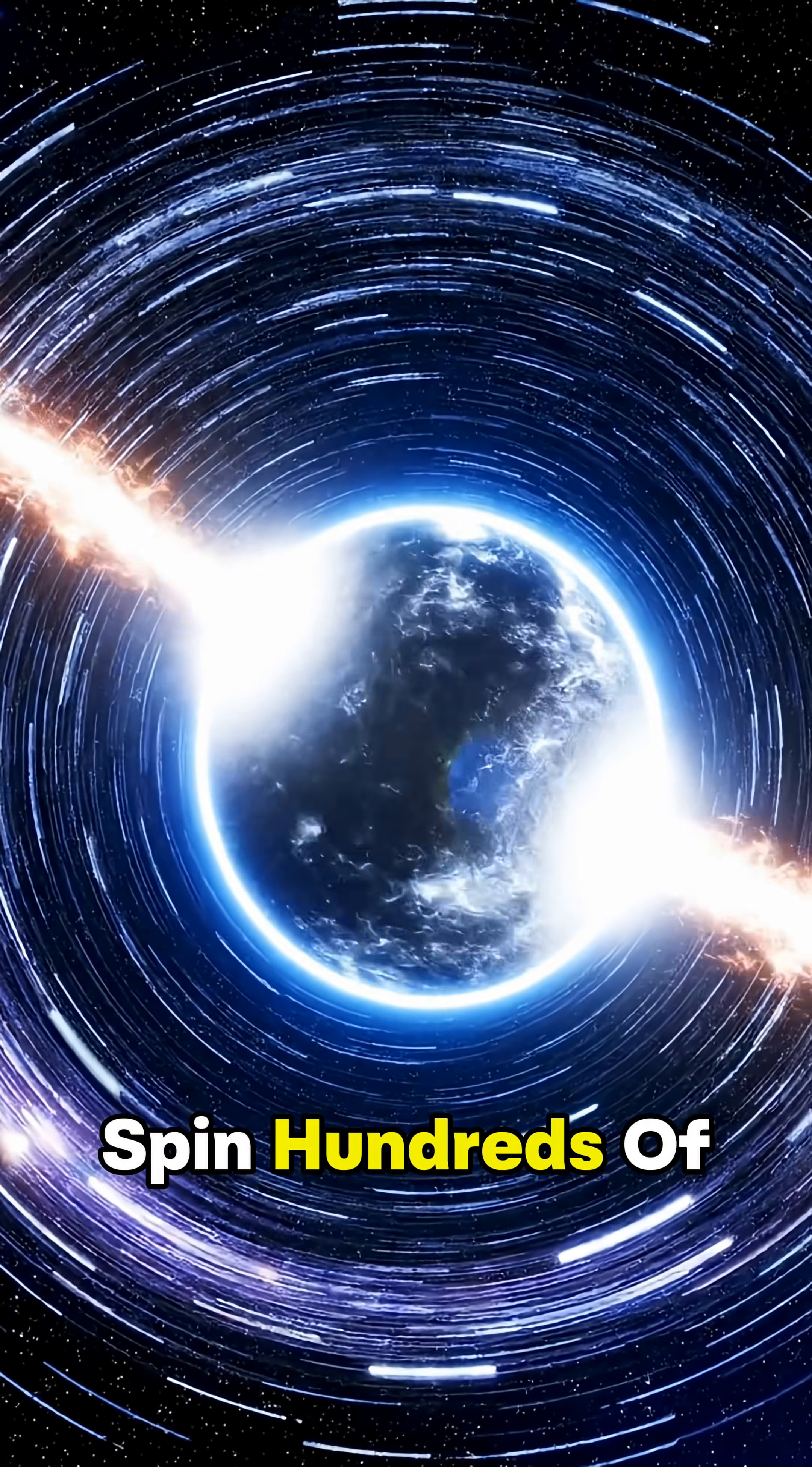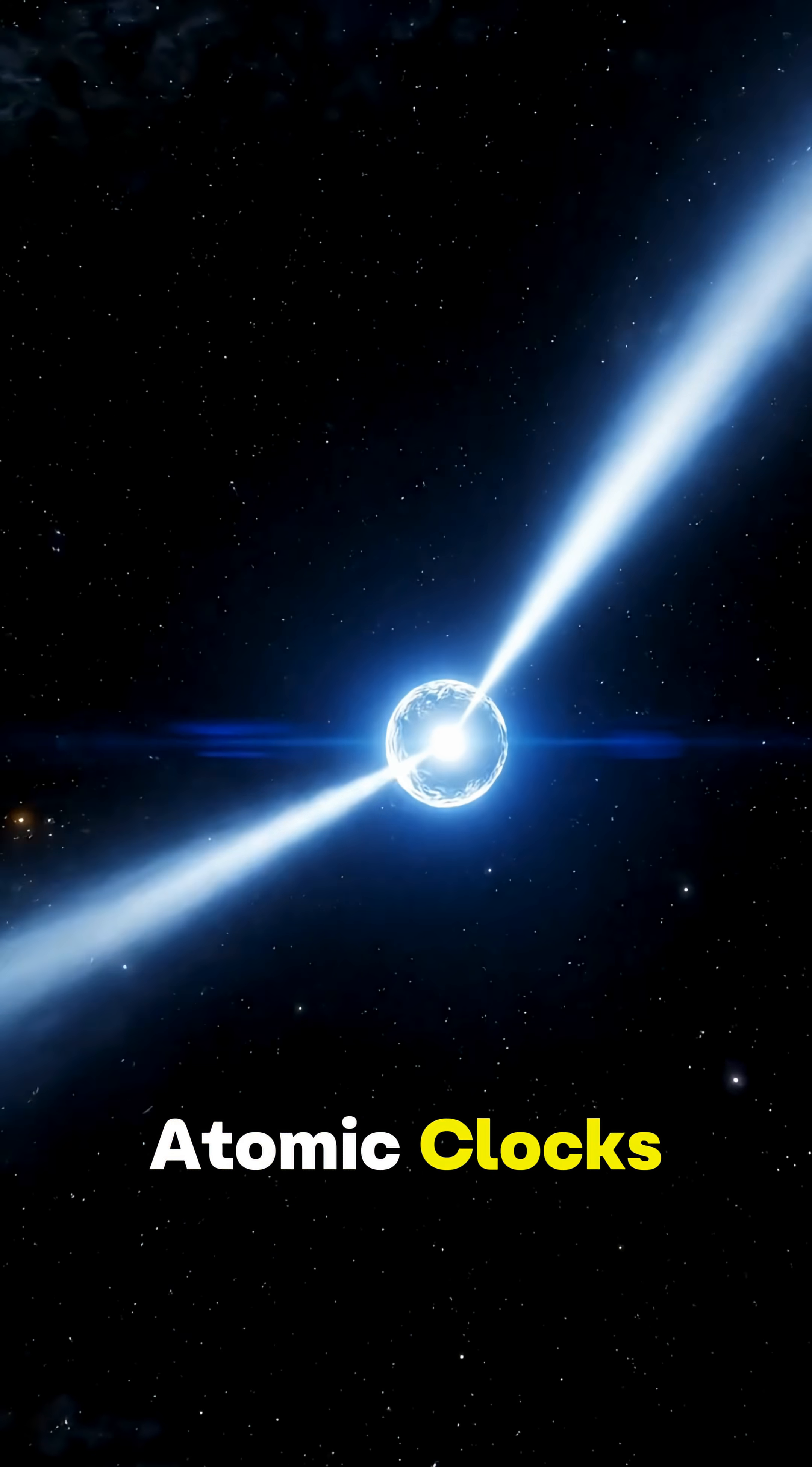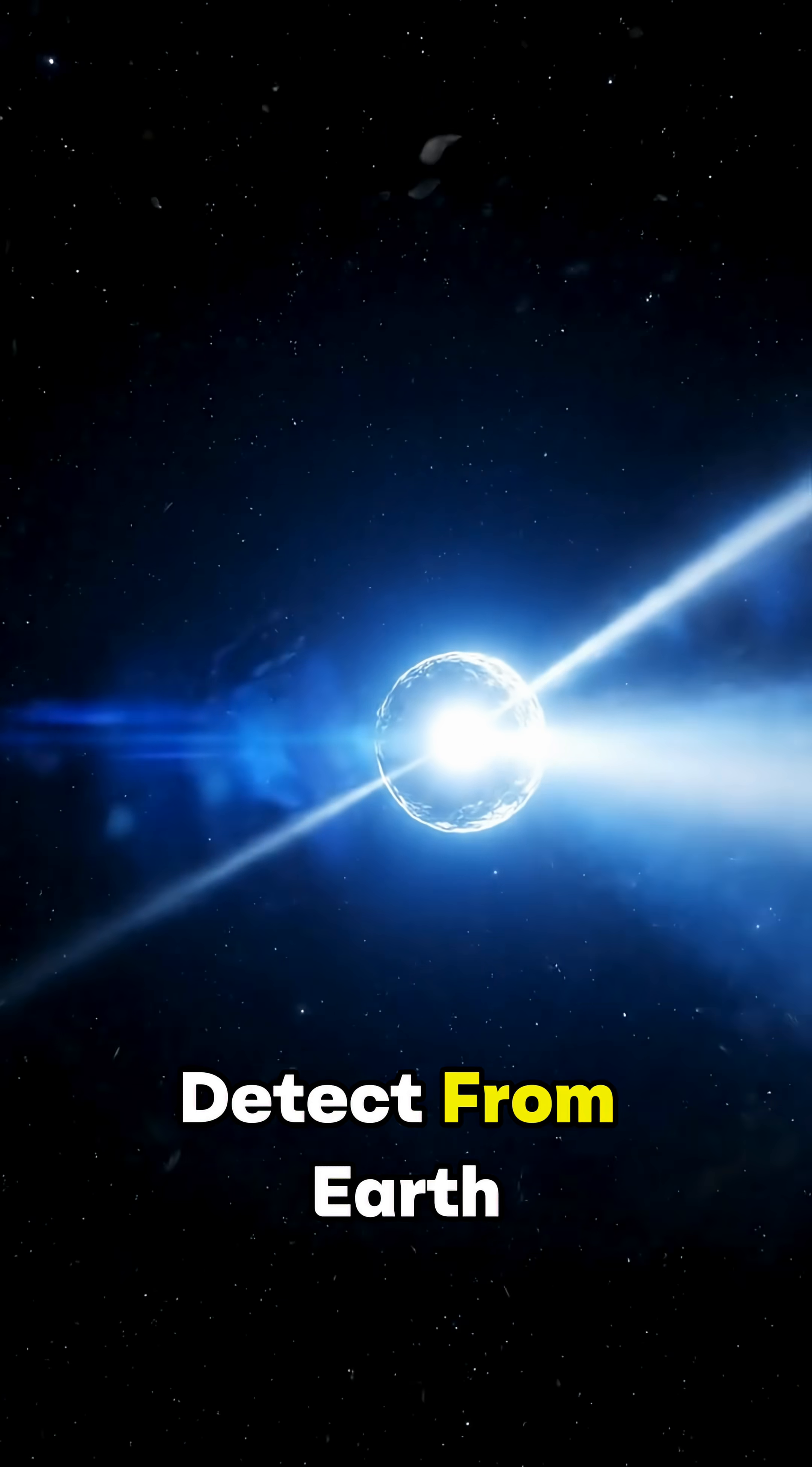Some neutron stars spin hundreds of times per second, rotating so precisely that they rival the accuracy of atomic clocks, firing beams of radiation across space like interstellar lighthouses that we can detect from Earth.